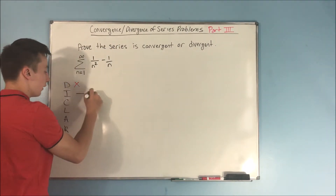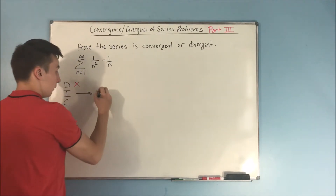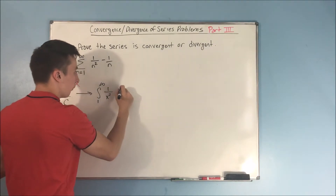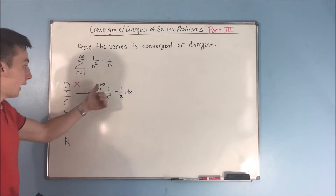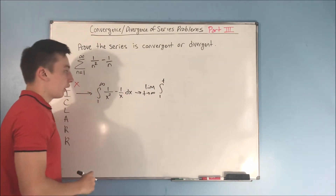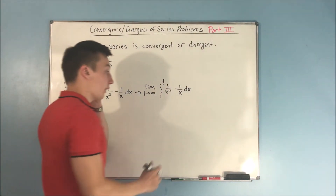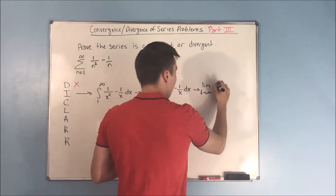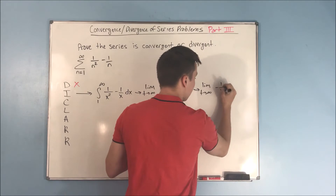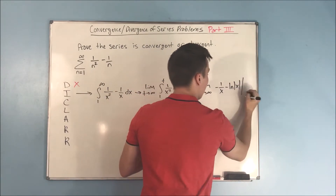Next is the integral test. We can use that here because this is going to be easy to integrate — just a reverse power rule. So we take the integral from one to infinity of one over x squared minus one over x dx. We can't have infinity as a bound, so we take the limit as t approaches infinity of the integral from one to t of one over x squared minus one over x dx. Integrating, one over x squared is x to the negative two, which becomes negative one over x, and the second term becomes minus natural log of the absolute value of x, evaluated from one to t.